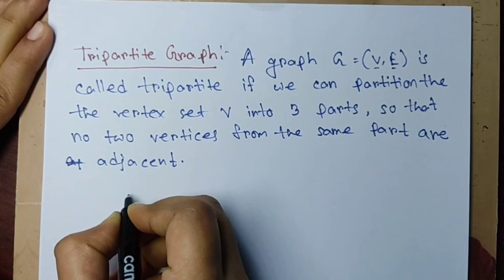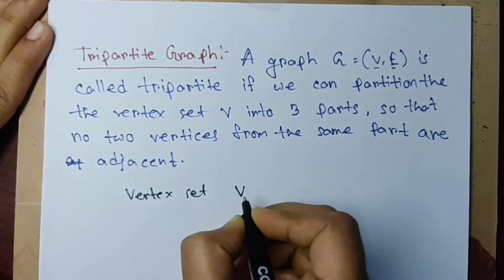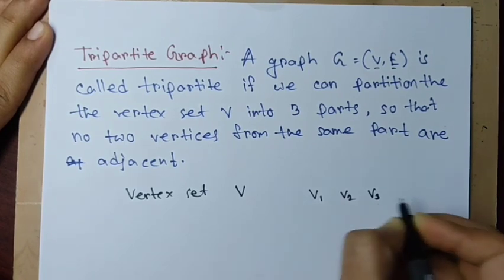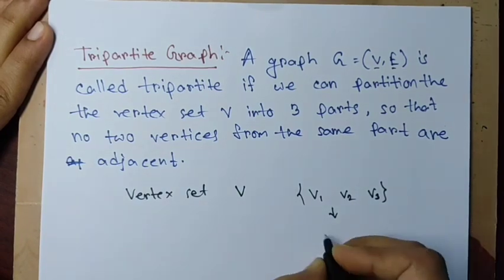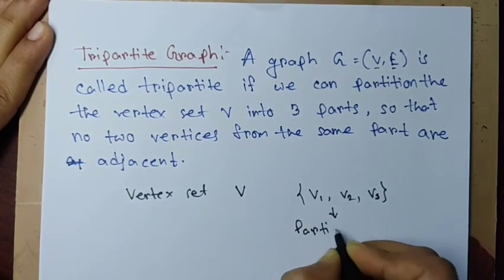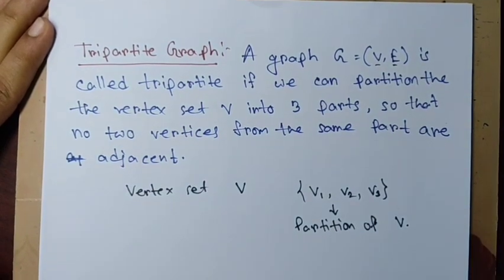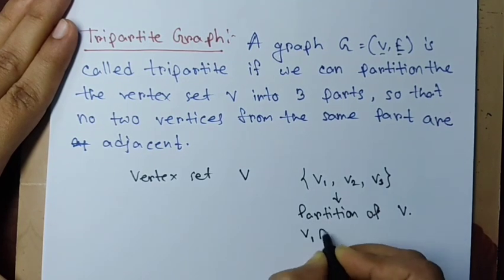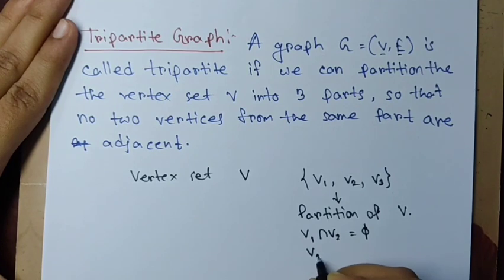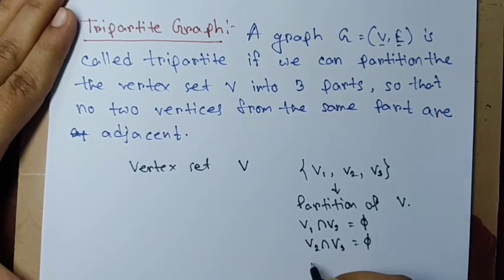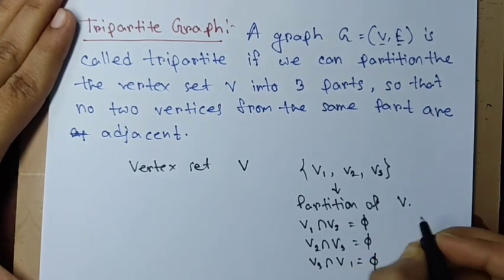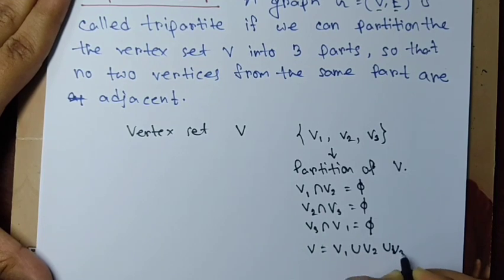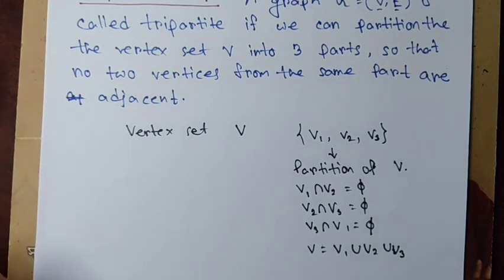Basically our vertex set is V, and we divide it — we have some partition of this vertex set V. Let's say V1, V2, and V3, so it is a partition of V. A partition means that V1, V2, and V3 are pairwise disjoint: V1 ∩ V2 = ∅, V2 ∩ V3 = ∅, V3 ∩ V1 = ∅, and also V = V1 ∪ V2 ∪ V3.